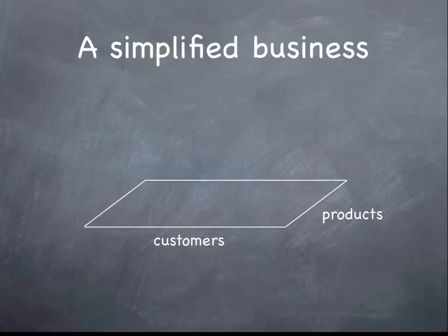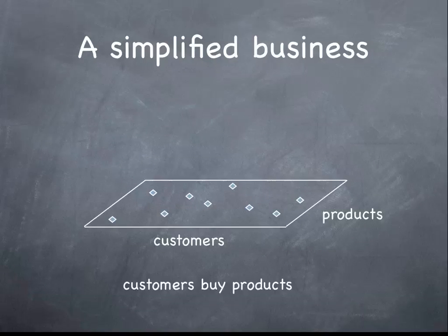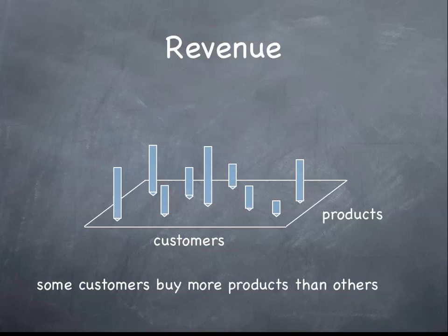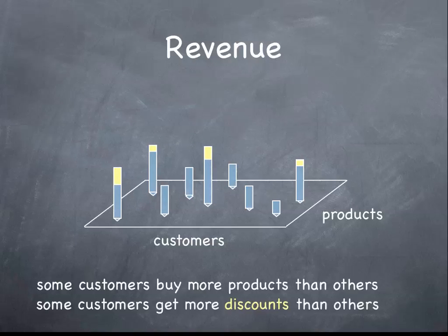In this little animation we will look at a simplified business where customers buy products. Some customers obviously will buy more products than others. Some customers will negotiate deeper discounts than others, which all affects the revenue picture.